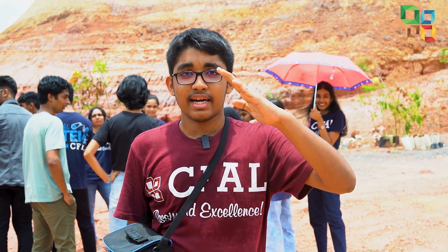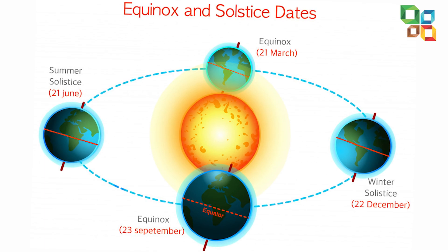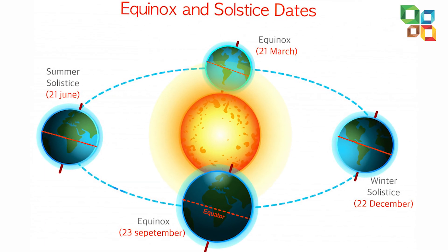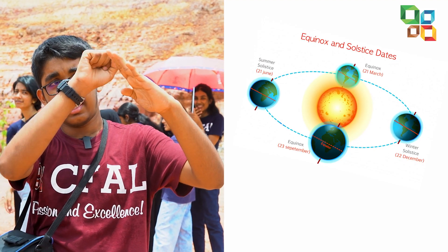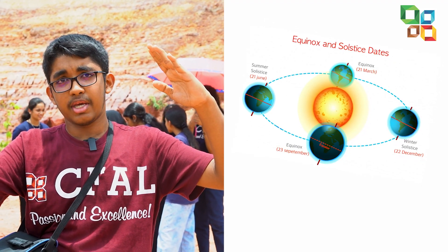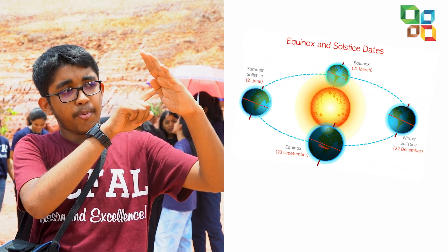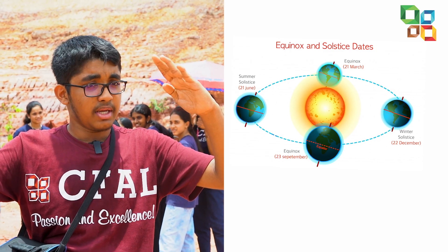If we imagine the earth having a tilted axis, and if the earth revolves around the sun in an elliptical orbit, at one point the earth will be exactly 23.5 degrees tilted and the sun will be here. At that point, the 23.5 degree latitude will be exactly straight towards the sun — that point will be perpendicular to the sun rays.